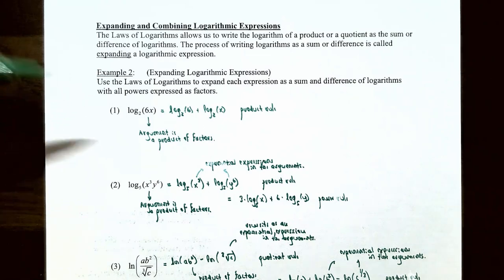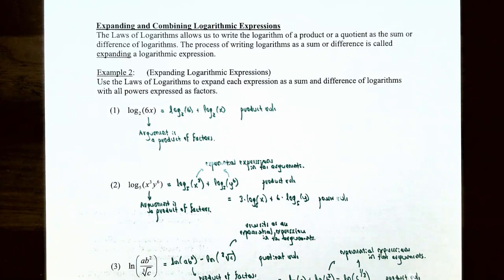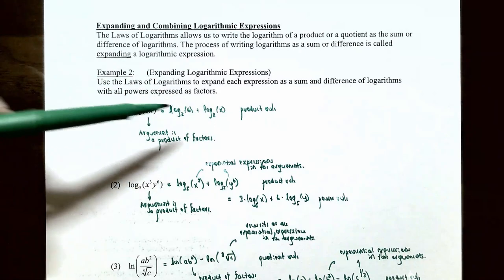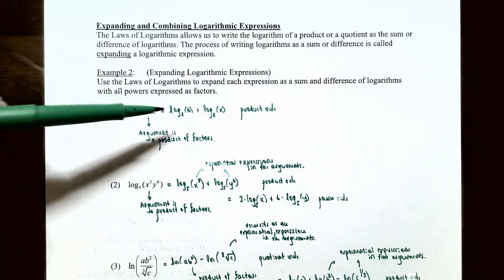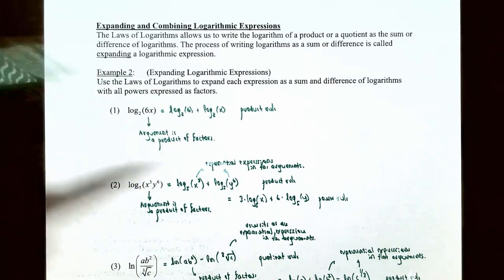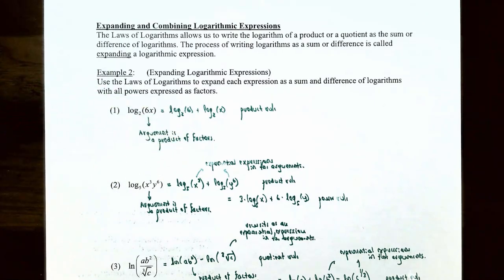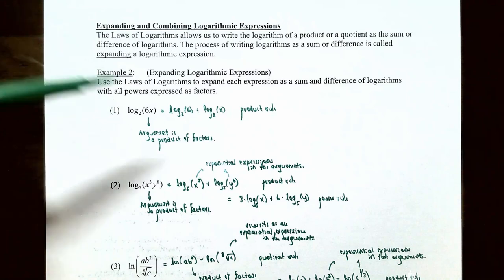Example two, number one: expand log base 2 of 6x. The argument is a product of factors 6 and x, so use the product rule. This gives log base 2 of 6 plus log base 2 of x. Since we don't know the value of x, this is as far as we can simplify. We took one logarithm expression and rewrote it into a sum of logarithms — this is expanding a logarithmic expression.